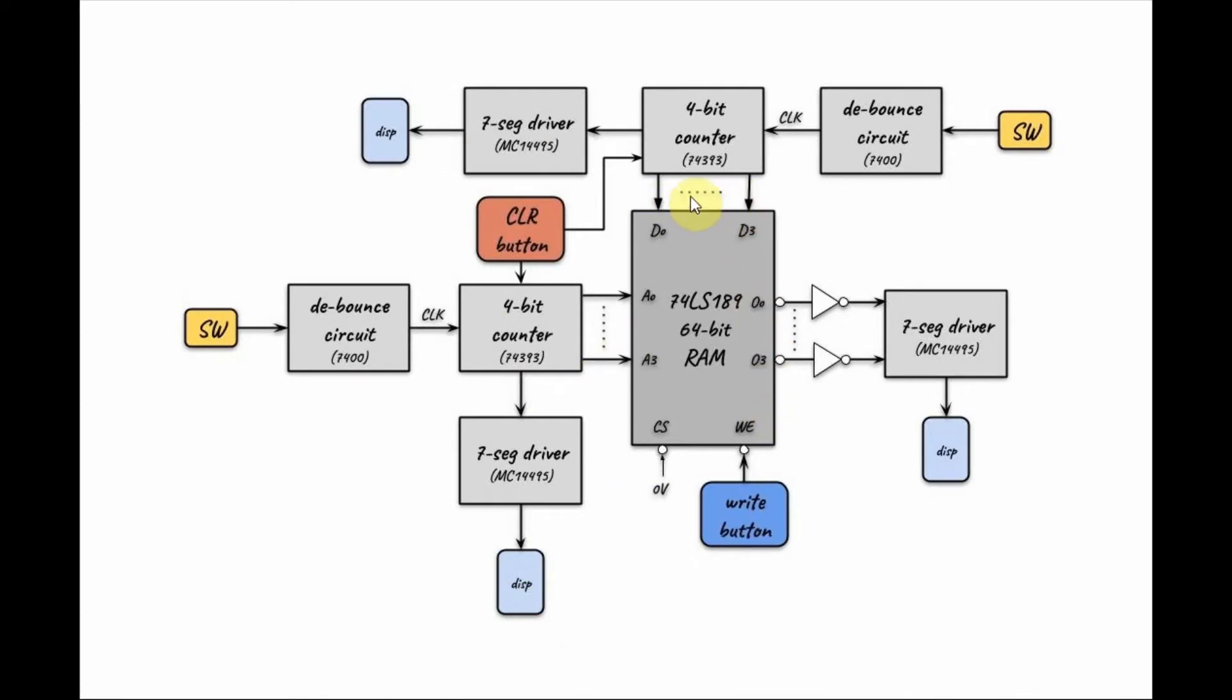Once we have the 4-bit number available at the input data lines and the user has selected the memory location through the address lines, the next step is to press the write button. This causes the data to be copied into that location. Once we release the button, the data will be available at the output lines, but first has to be negated and then fed into the seven segment display.